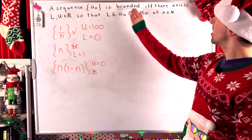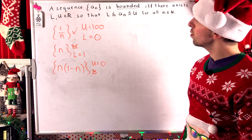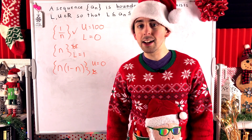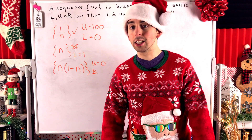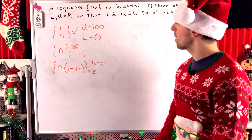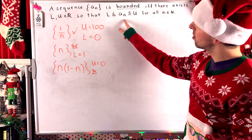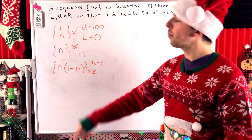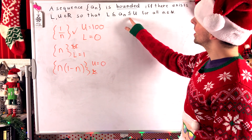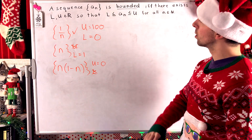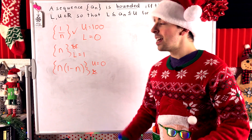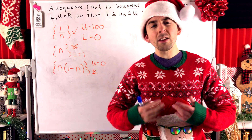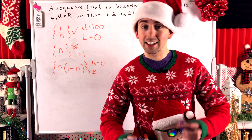So once more: a sequence is bounded if and only if there exist real numbers l and u — a lower and upper bound — so that every term of the sequence is greater than or equal to l, the lower bound, but less than or equal to u, the upper bound. These bounds are not unique and not even necessarily distinct.